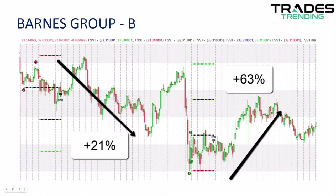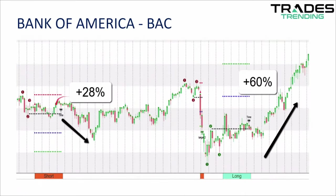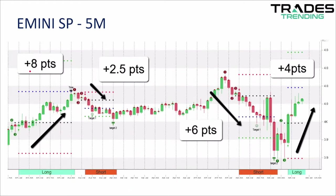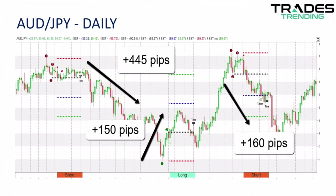Like this in GE — a 36% move to the upside, followed by a 26% move to the downside. This move in Barnes Group — a 21% move to the downside, followed by a 63% move to the upside. Here we have Bank of America — a 28% move to the downside, followed by a 60% move to the upside. Gold on a four-hour chart — an $1,800 per contract move, followed by a $900 per contract move. Even the S&P — 8 points, 2.5 points, 6 points, 4 points, all in a single session. Forex traders — the Aussie/yen had a 150-pip move, 440-pip move, 160-pip move.